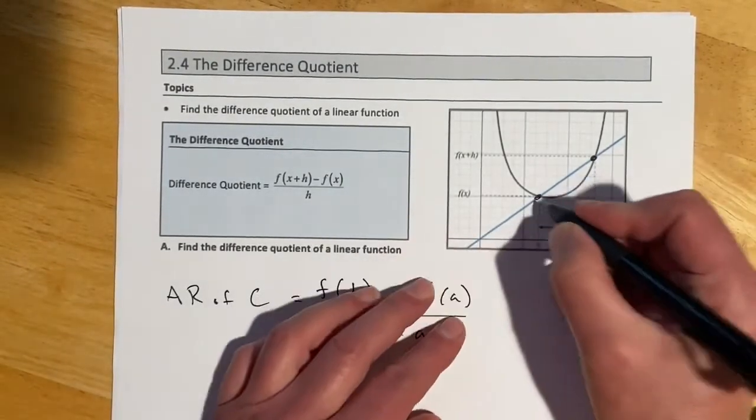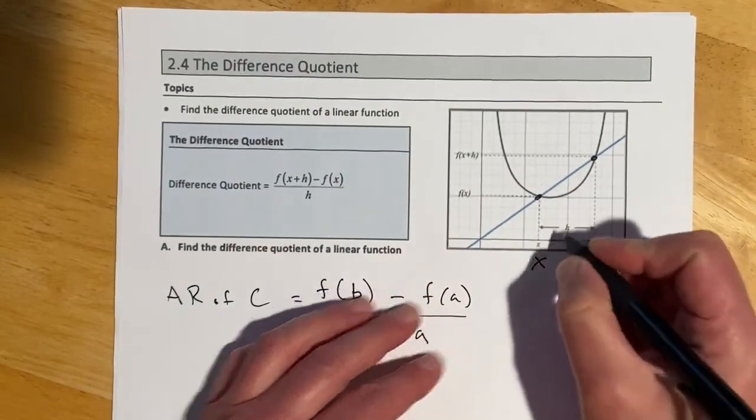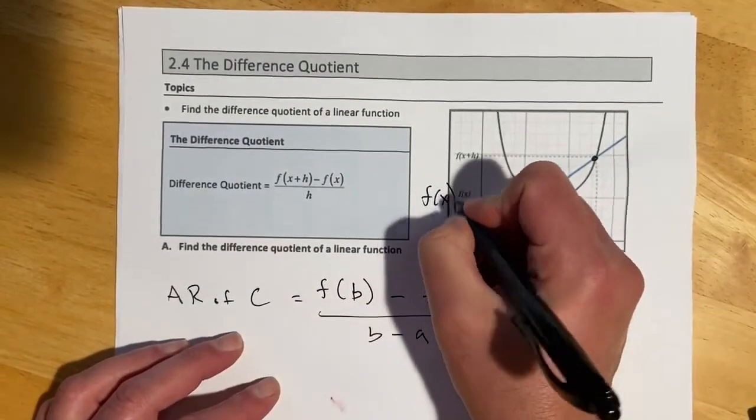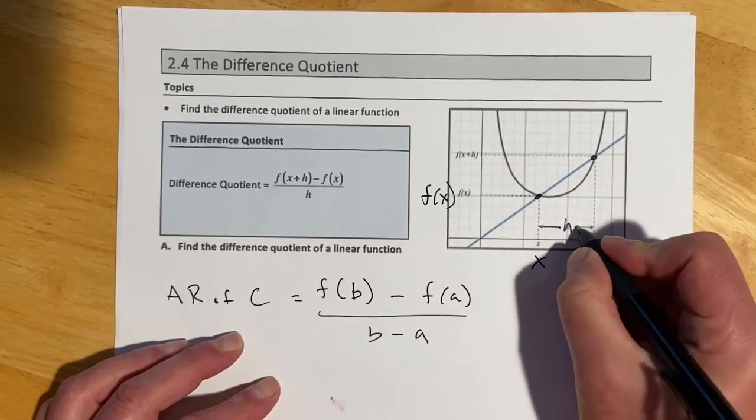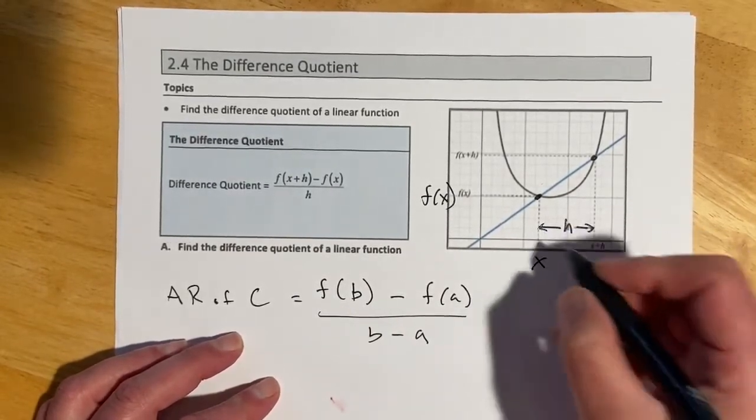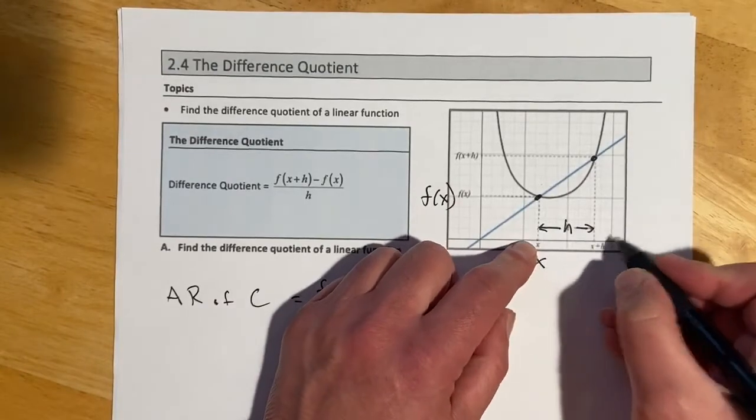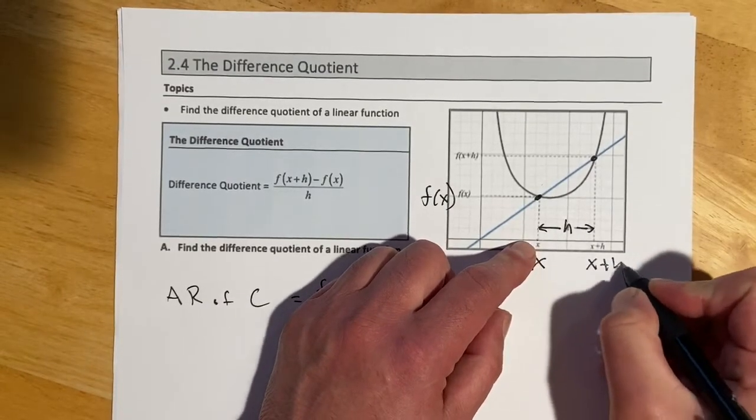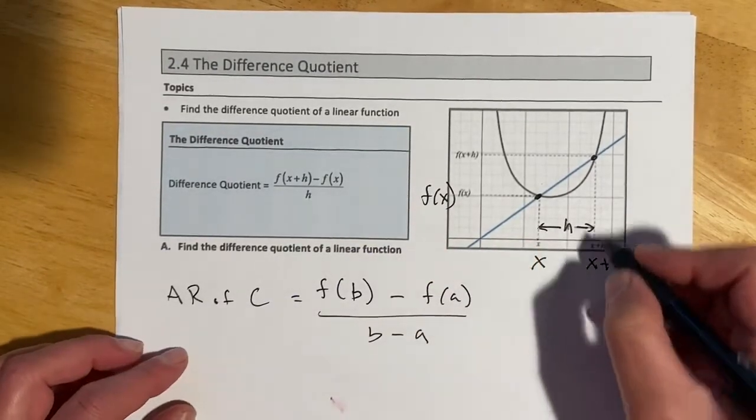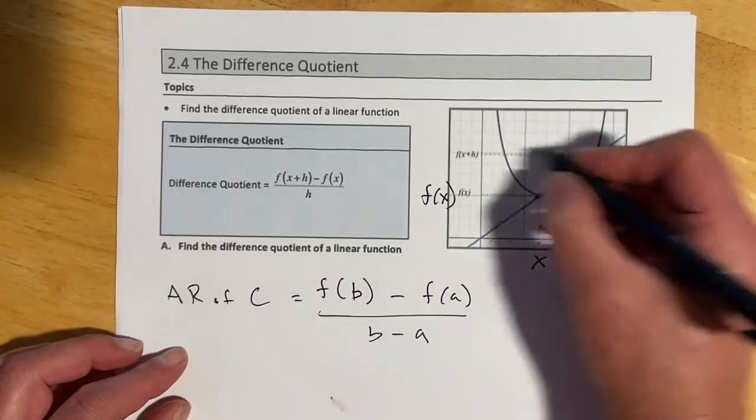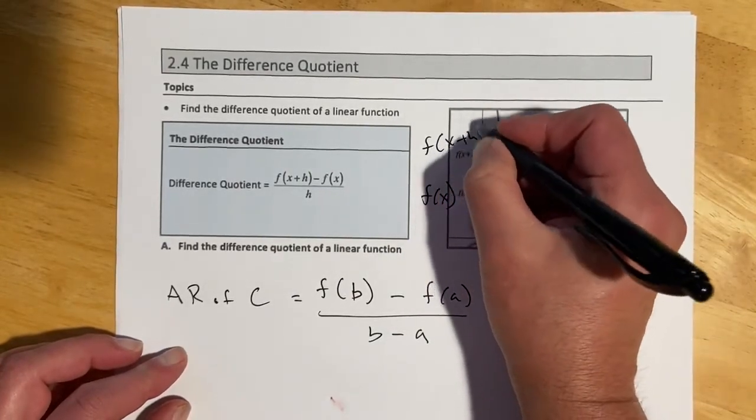And I had a drawing kind of similar to this that I did. And this would have been our f of b and this would have been our f of a. And so we're finding our change in y. This was our b, this was our a. We're finding our change in x. So the difference quotient is the same thing again.